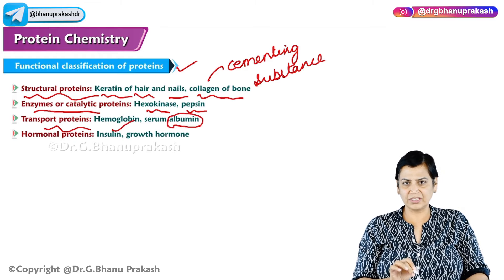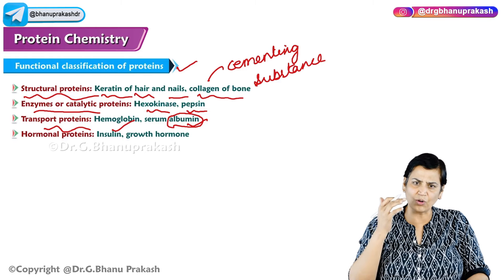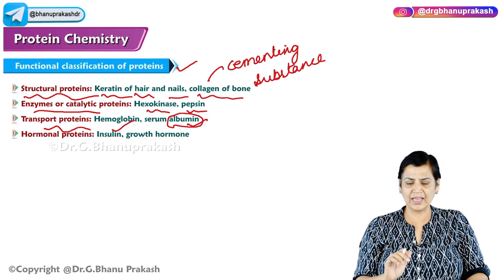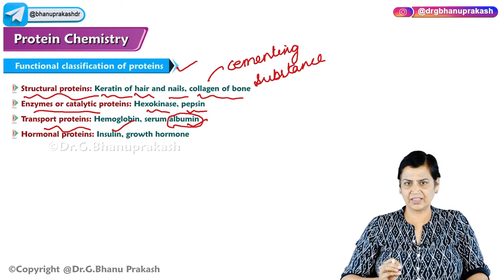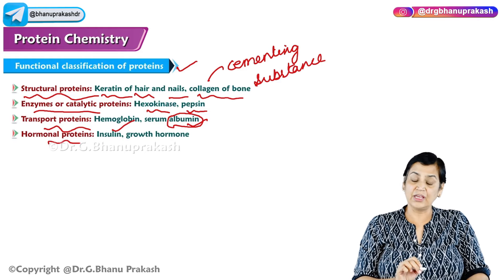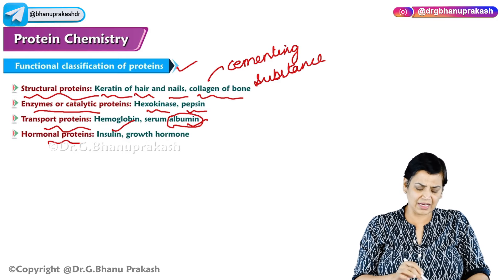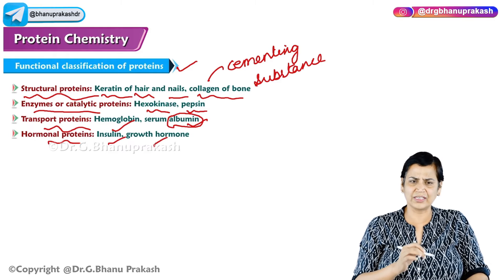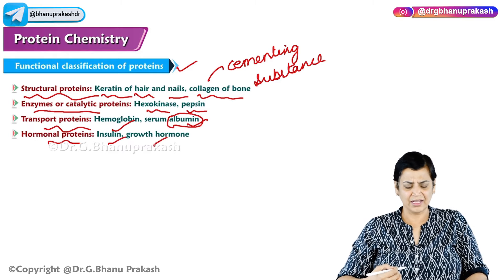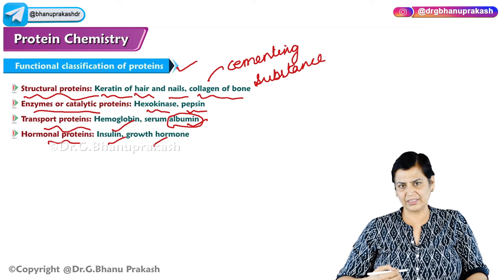Hemoglobin transports oxygen. Albumin is a very important plasma protein that carries many substances. Then there are hormonal proteins — proteins that act like hormones — including insulin, growth hormone, oxytocin, vasopressin, and angiotensin. These all fall under the functional classification of proteins.